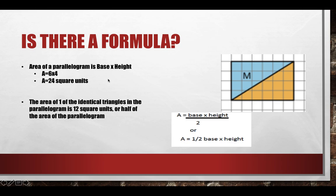This all leads us to the formula for the area of a triangle. The area of a parallelogram is base times height. With this parallelogram, the base is six units long and the height is four units. We multiply those together and get 24 square units. If you don't believe me, just count the individual boxes and you'll see there are actually 24 boxes in this parallelogram.